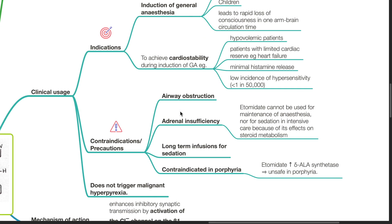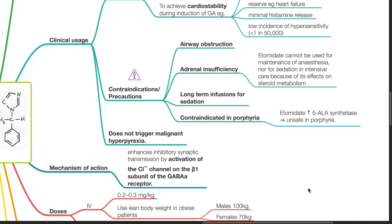Contraindications to etomidate include airway obstruction, adrenal insufficiency. Etomidate cannot be used for maintenance of anesthesia nor long-term infusions for sedation in intensive care due to its effects on steroid metabolism. Etomidate is contraindicated in porphyria, as it increases delta-ALA synthetase and is unsafe in porphyria. Etomidate does not trigger malignant hyperpyrexia.